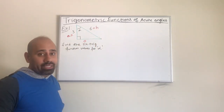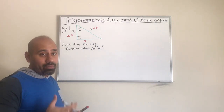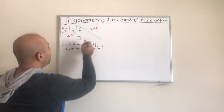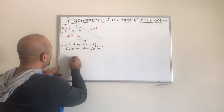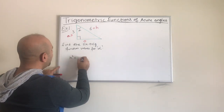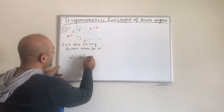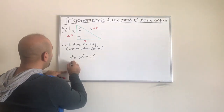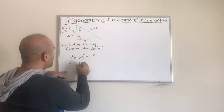Let us first find the value for the length of the opposite. To do that, we have to use the Pythagorean theorem — it's a right triangle, so we can use the Pythagorean theorem. The hypotenuse squared equals the adjacent squared plus the opposite squared, so six squared equals three squared plus the opposite squared.